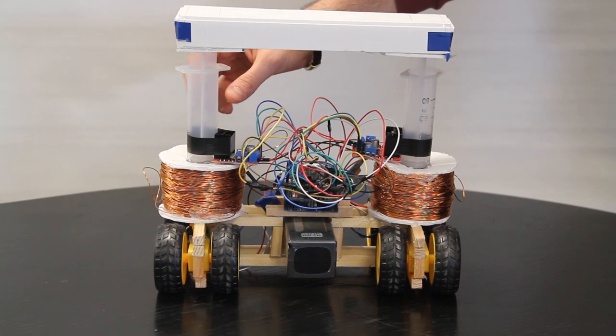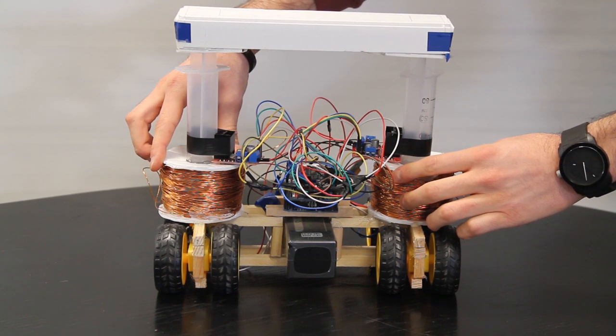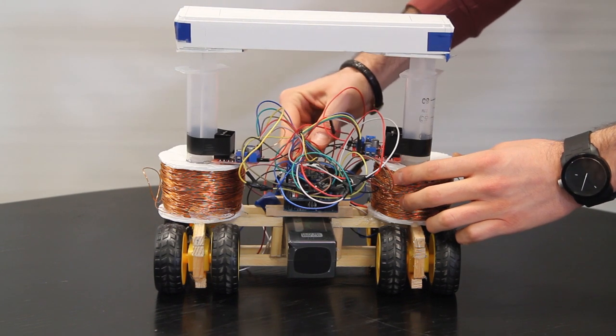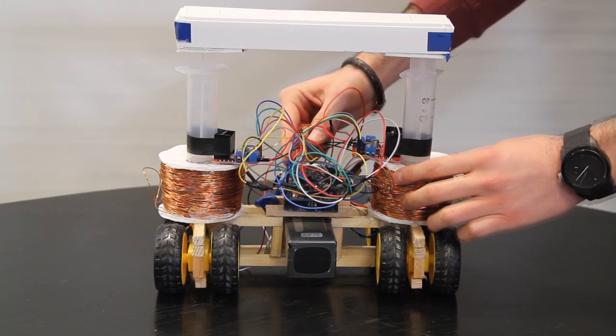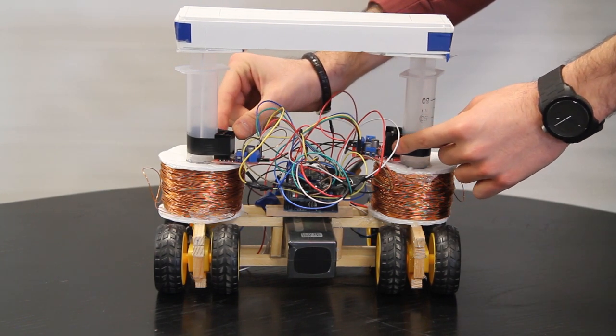For the active suspension part, we wound two coils around our cylinders and we are passing current through these coils. We control the magnitude and the direction of the current via HC-05 Bluetooth module. Due to the fact that we need to pass high currents through coils, we use two different motor drivers here.